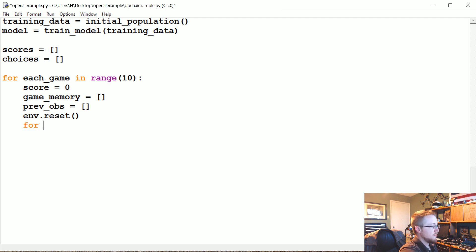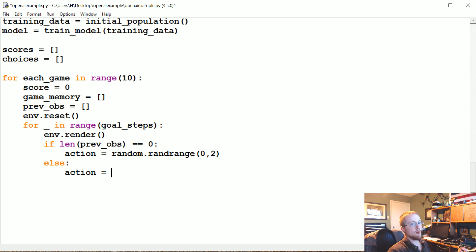Now we're actually going to iterate through the game. For underscore, which is basically your frame, in range of the goal steps, however many steps we want to make which is 500, say env.render. If len(prev_obs) is equal to 0, so if there is nothing, then we're just going to say the action equals random.randrange 0 to 2. So on that first frame we're not going to know what move to make, that's fine.